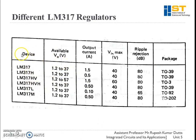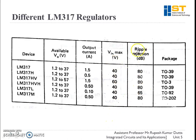These are the different devices in the LM317 series along with their corresponding available output voltages, output currents, input voltages that must be applied, and ripple rejection that can be obtained from these packages. These are also the part code names for these packages.